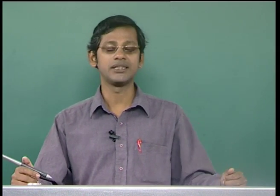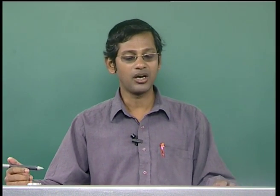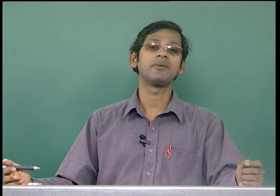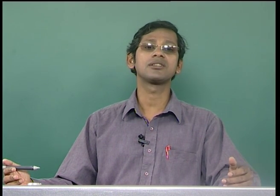Auger electron spectroscopy is a very widely used technique for surface characterization of materials. It is used to know the electronic states of different elements present on the surface and can be used to measure compositions of different elements on the surface. This is a non-radiative deactivation process, unlike XPS where you use an X-ray source to eject a core level electron from an atom and then measure the kinetic energy of that ejected electron.